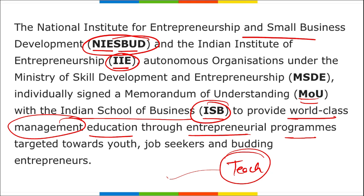Indirectly, this MOU will create job opportunities for thousands of individuals. NIESBUD is headquartered in Noida, NCR, Uttar Pradesh. IIE (Indian Institute of Entrepreneurship) is located in Guwahati, Assam. ISB (Indian School of Businesses) is located in Hyderabad, Telangana.